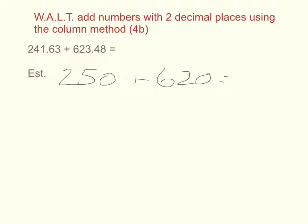I could use partitioning at this stage and add my 200 onto my 600 to give me 800, and 50 onto my 20 to give me 70. My 800 and my 70 would give me an estimate total of 870. I know that the answer to this question should be in the region of that.